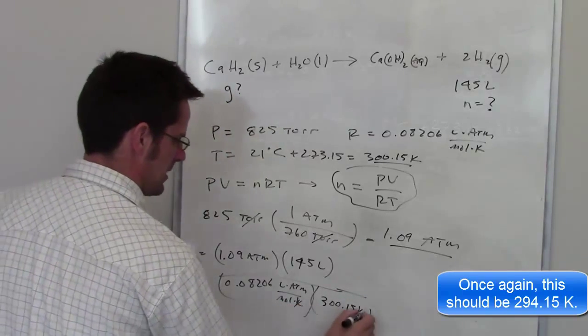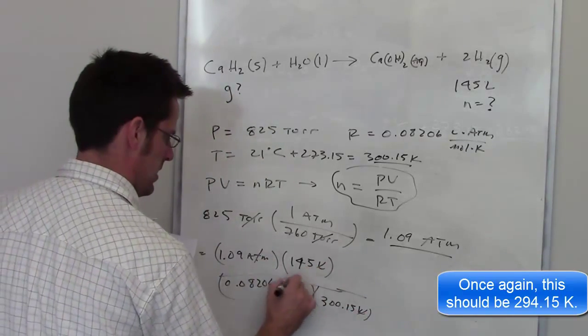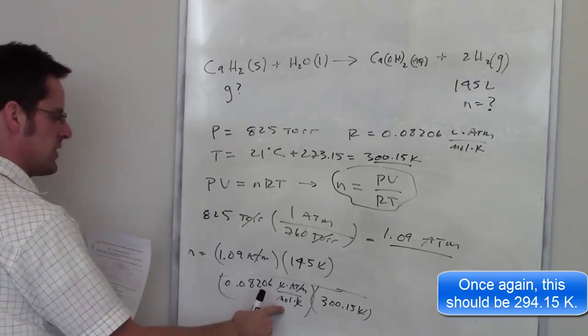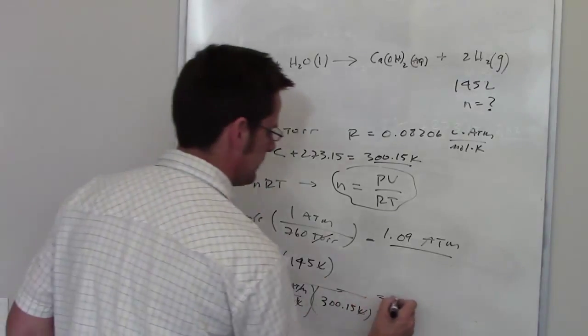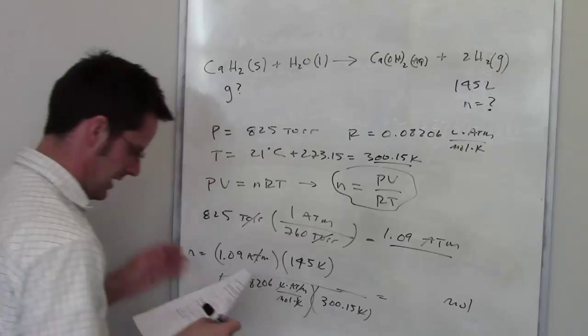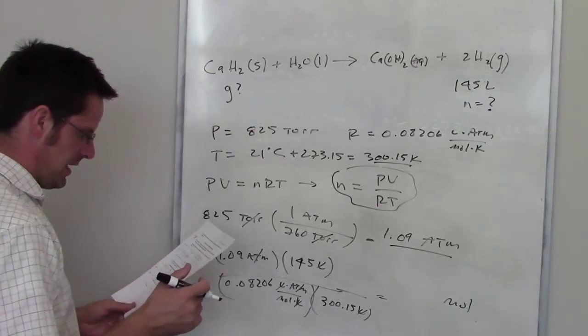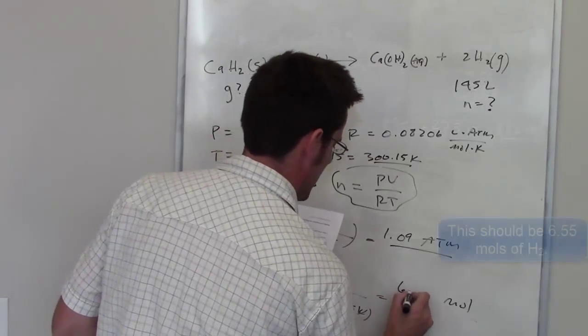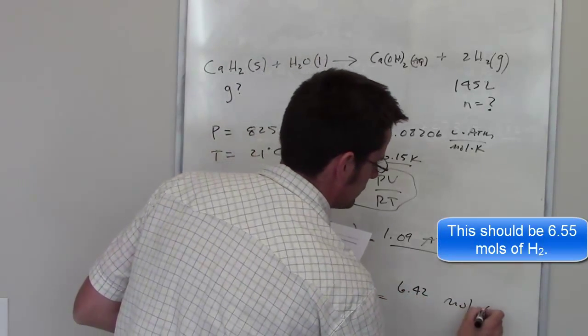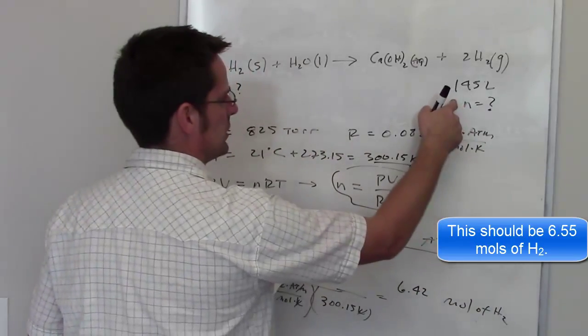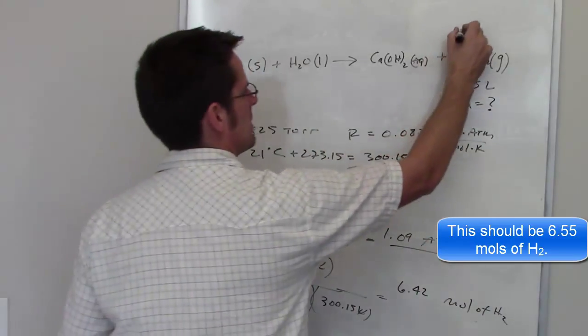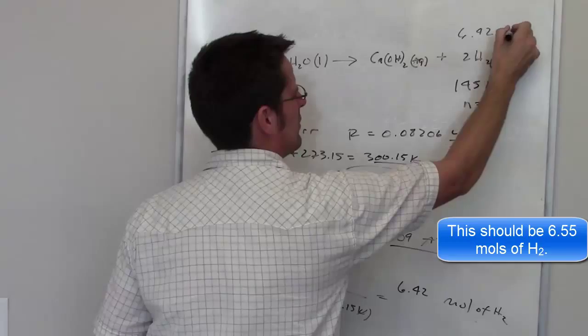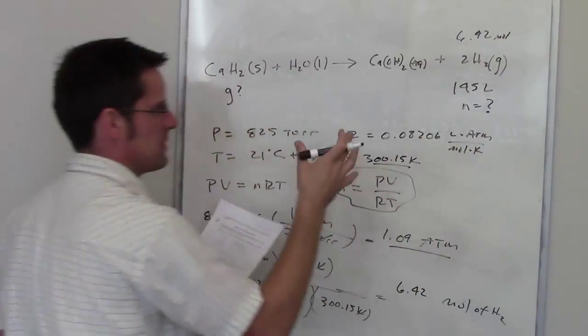I should have all my units cancel out. It should leave me with moles. Moles are in the denominator of the denominator, which means they're in the numerator. So I've got moles over here. I times all that through in my calculator, and I end up getting 6.42 moles of hydrogen. Remember, this is moles of hydrogen. So what I'm going to do is write that down, 6.42 moles of H2. That is how many moles I'm going to be producing.